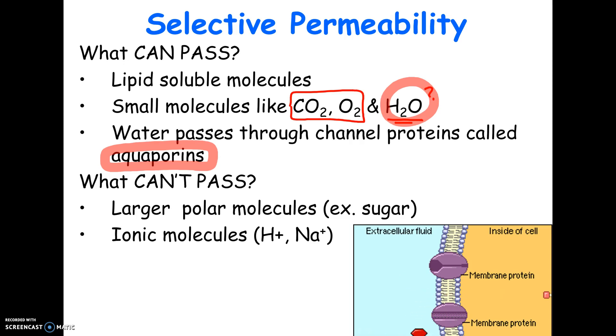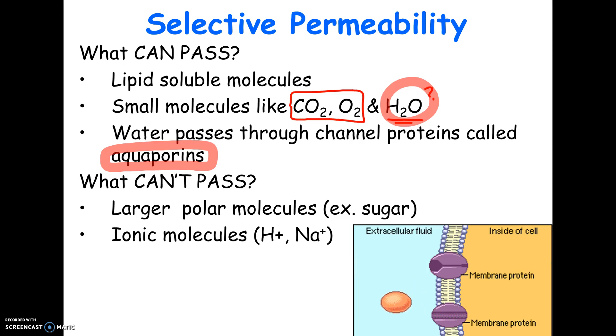In the animation, you can see sugar — a large polar molecule — passing through proteins, not through the phospholipids themselves. And a third molecule shown is too big; it can't pass at all.